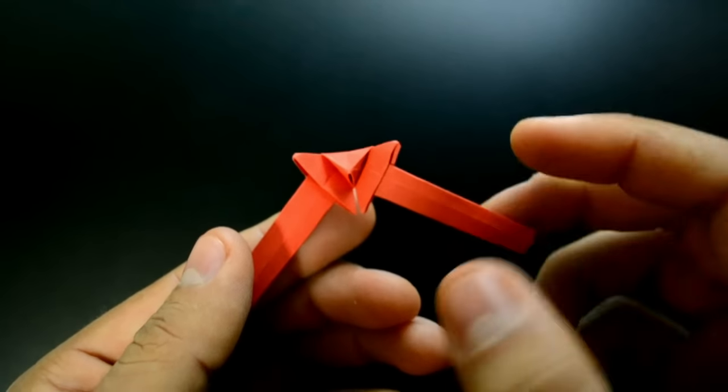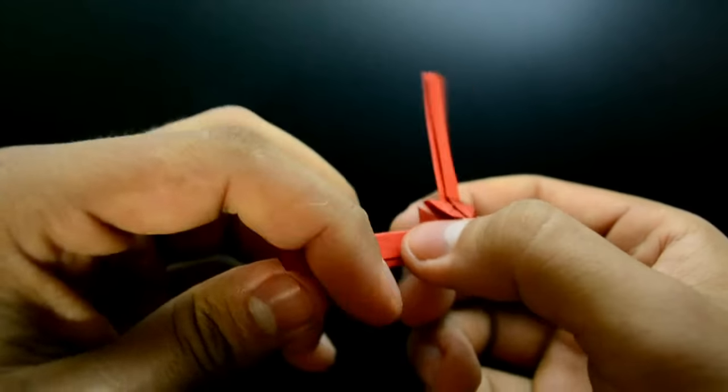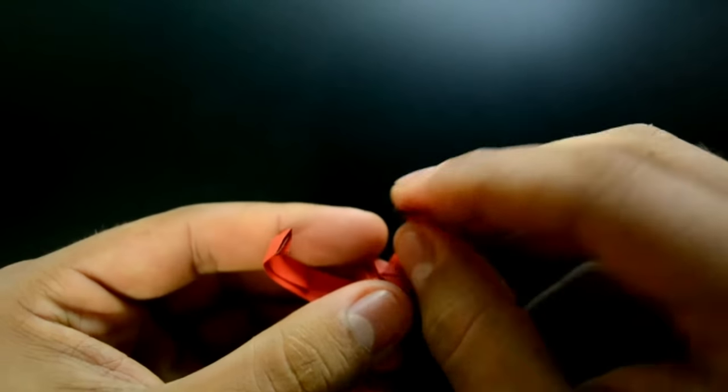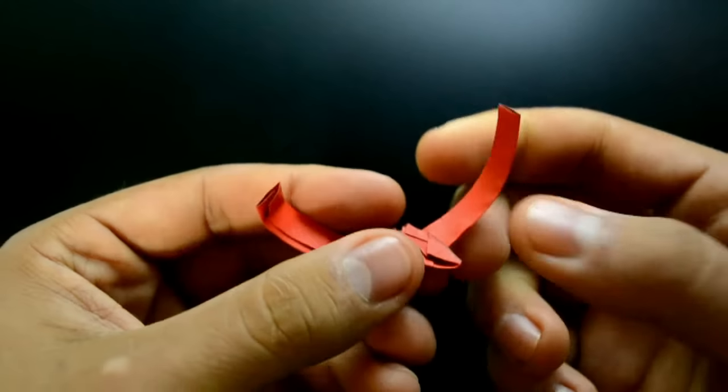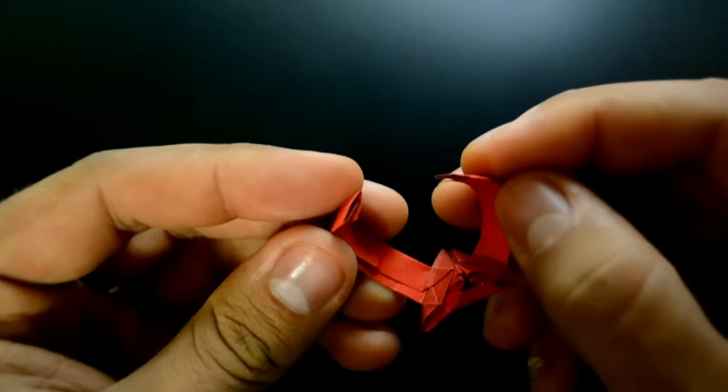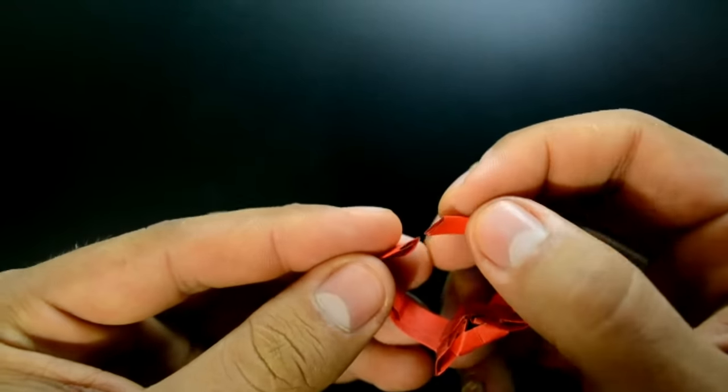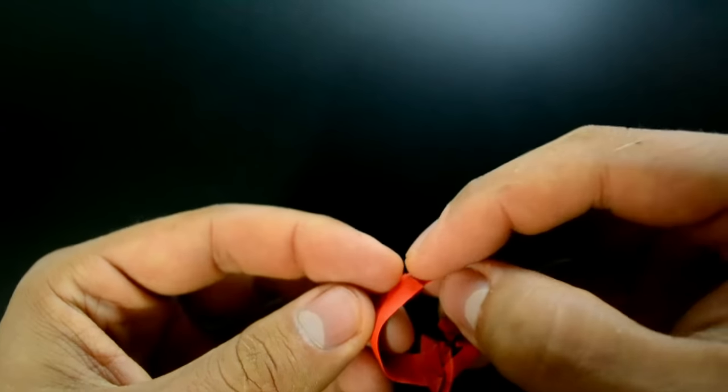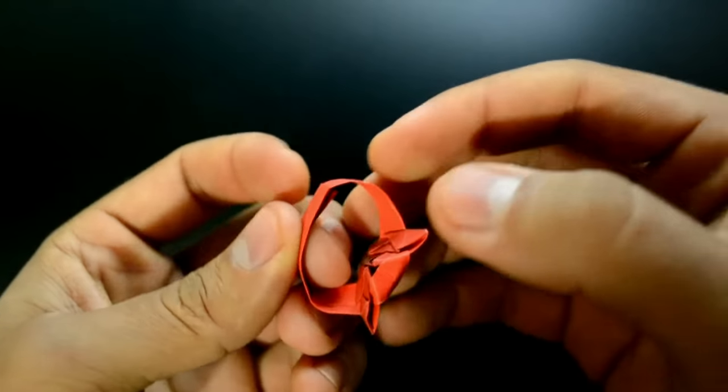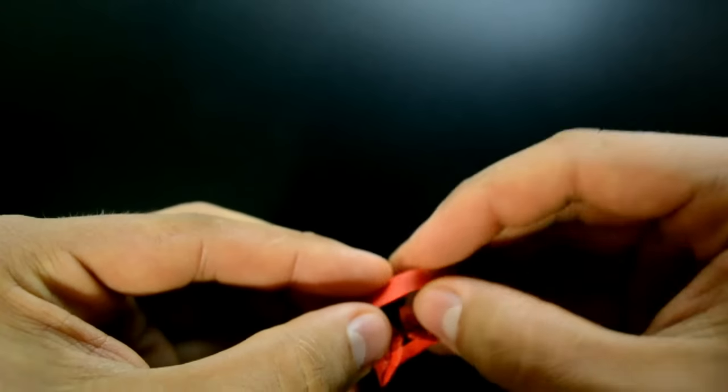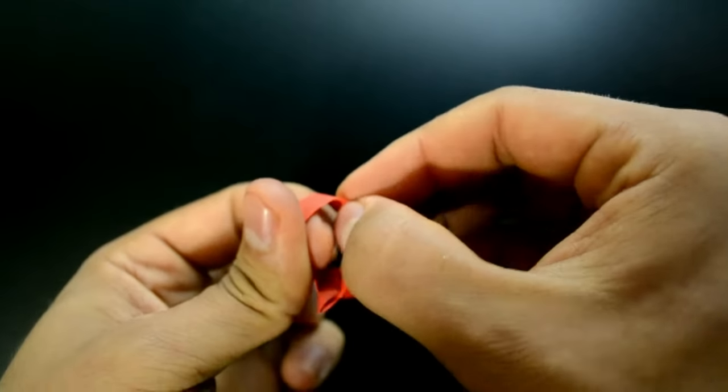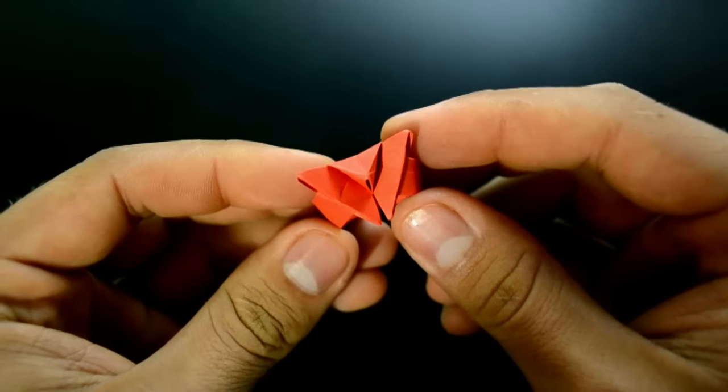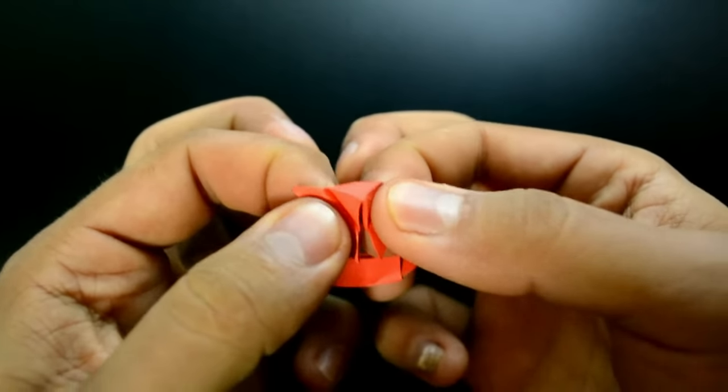Now, for the last step, we'll connect the sides. First, making this curve. Then, placing one inside the other. Our ring is ready to use.